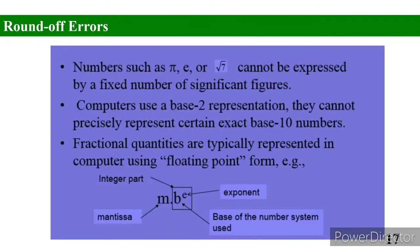Round-off errors arise because numbers such as pi, exponential, or square root cannot be expressed by a fixed number of significant figures. Computers use a base-2 representation and cannot precisely represent certain exact base-10 numbers. In floating-point notation: m is the mantissa, b is the base of the number system, e is the exponent, and the integer part is also stored.